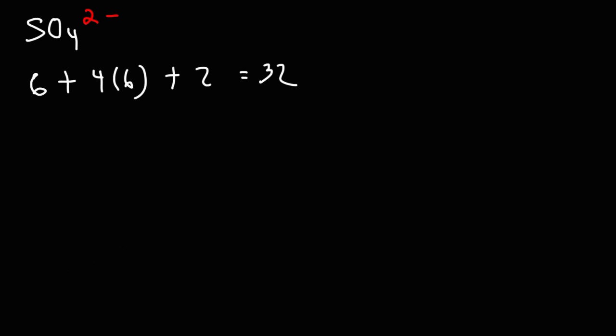Now notice that the number that we have is a multiple of 8. When you see this, this indicates that there's not going to be any lone pairs on the central sulfur atom.